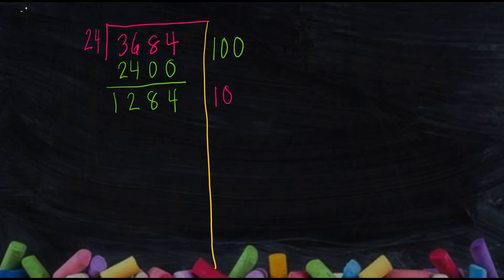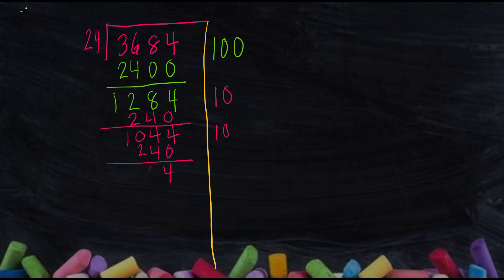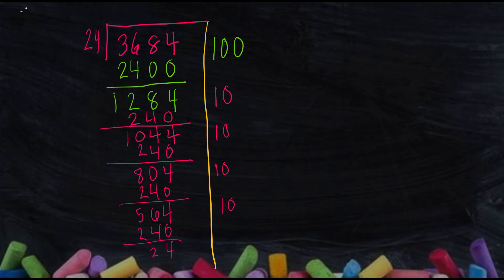So I'll go by tens. If I gave every one of 24 boxes 10 paper clips at a time, I'd give out 240. I'd still have 1,044 left. I didn't get rid of many in that round, but I can do another group of 10: another 240 gone. You can see I could keep doing this by tens for as long as needed, round after round. Continuing down — after several rounds of 10 — I eventually have 84 paper clips left.